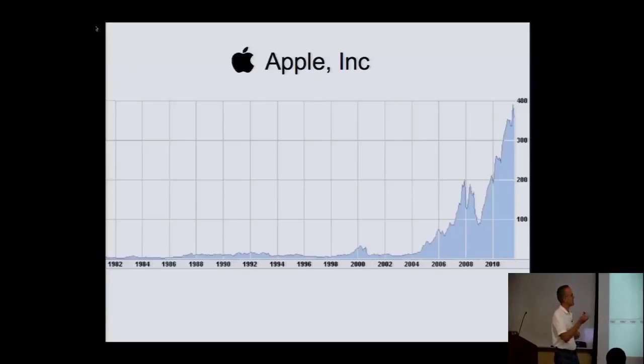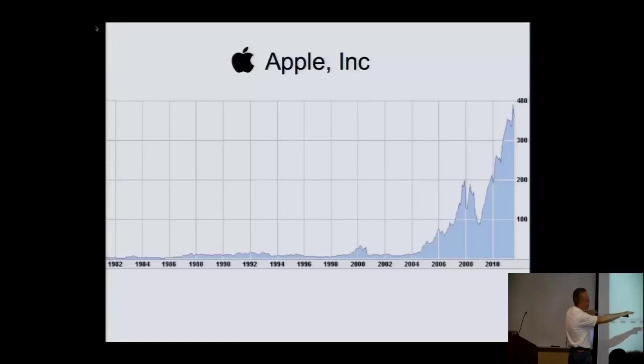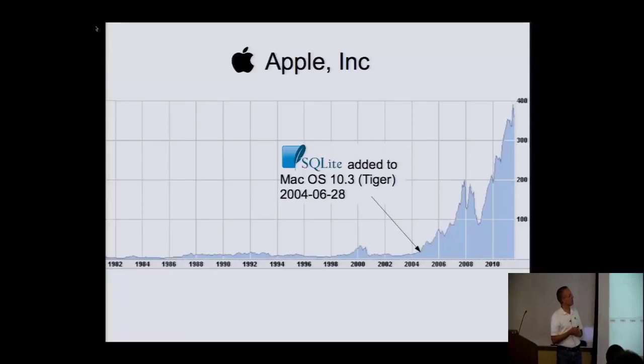This is a graph of Apple's stock price from when they originally went public in 1981 up until about 2012. You can notice how the stock stayed around $10 or $15 per share for over 20 years, and then suddenly started rising up to $1,000 adjusted for the 8-to-1 split. SQLite was introduced into the Mac platform right there.